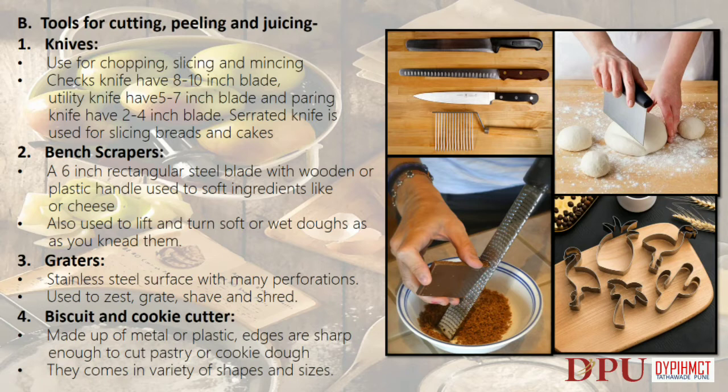Graters: stainless steel surface with many perforations, used to zest, grate, shave and shred. Biscuit and cookie cutters: made of metal or plastic, edges are sharp enough to cut pastry or cookie dough and come in a variety of shapes and sizes.